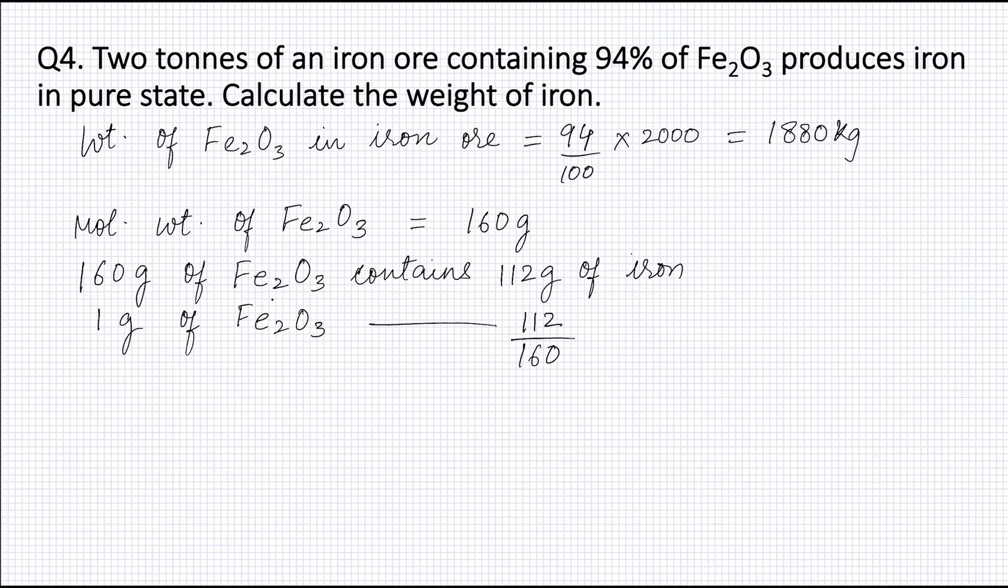Therefore, the amount of iron in 1,880 kg of Fe2O3 will be 112 divided by 160 into 1,880 kg, which is equal to 1,316 kg of iron.